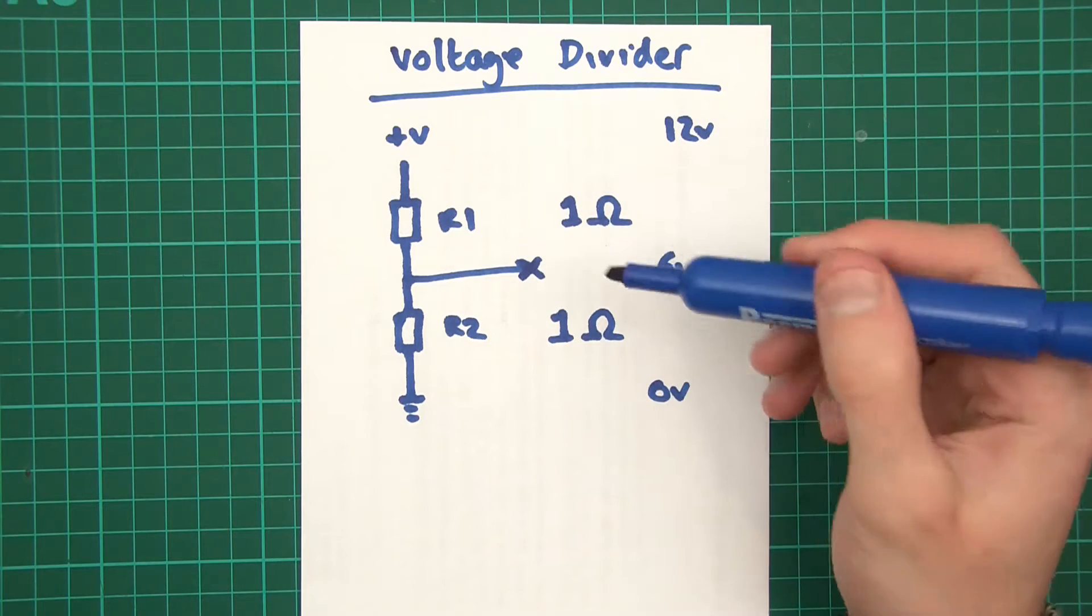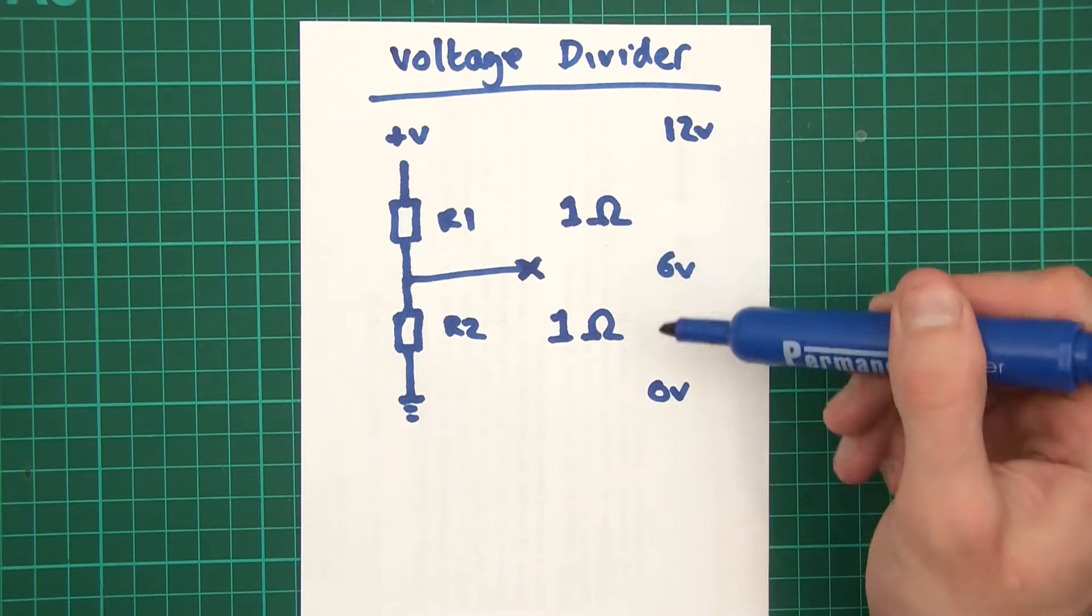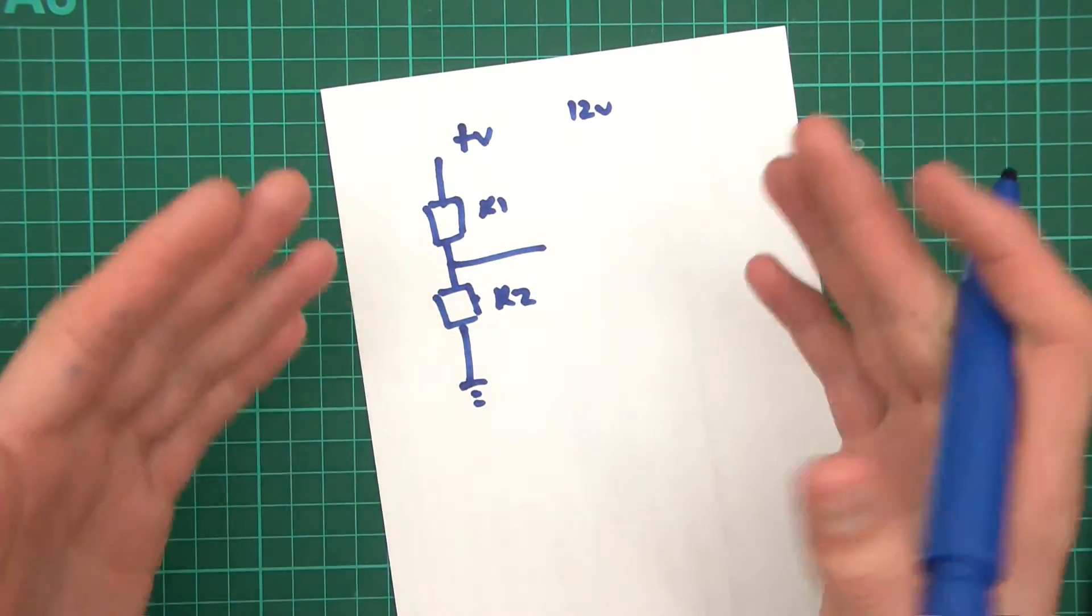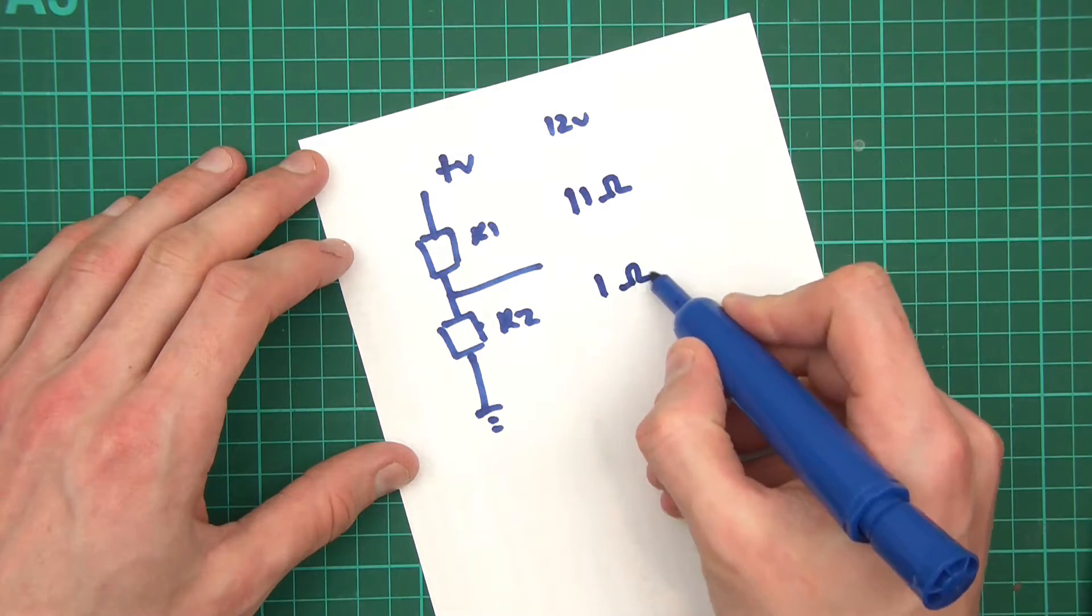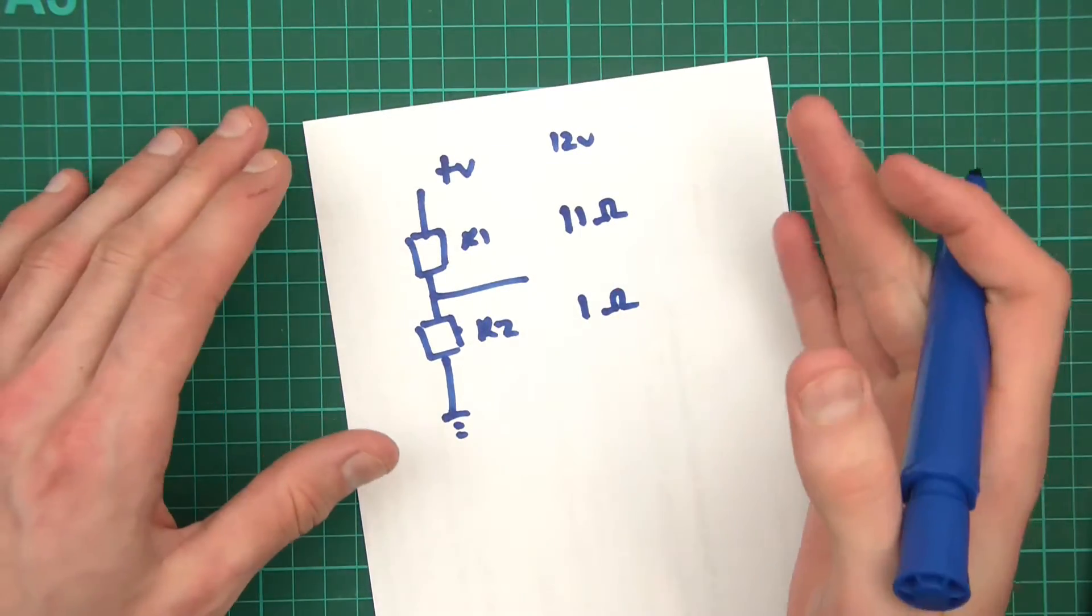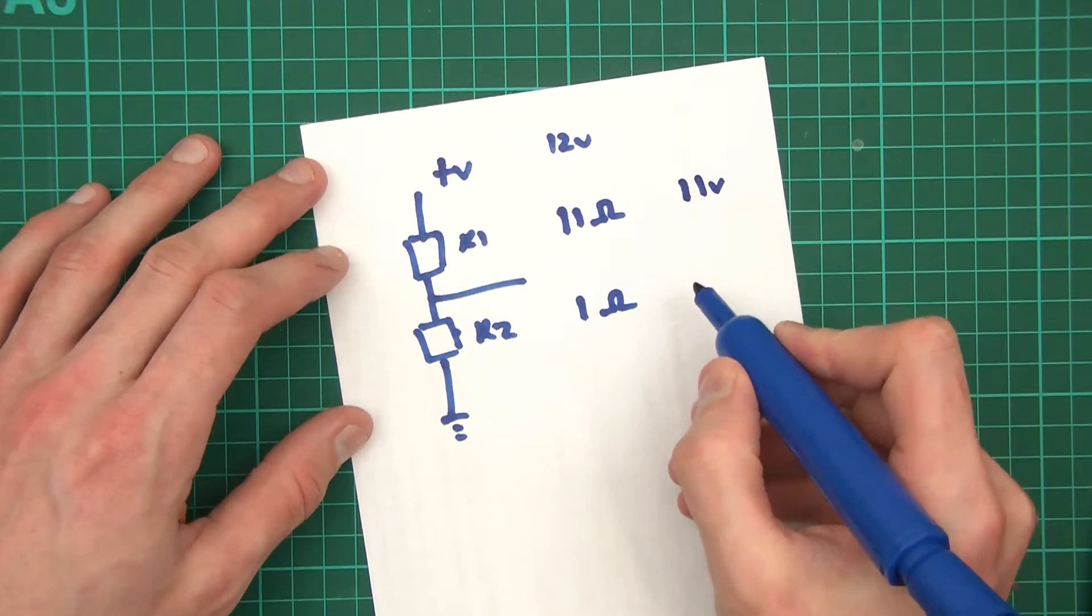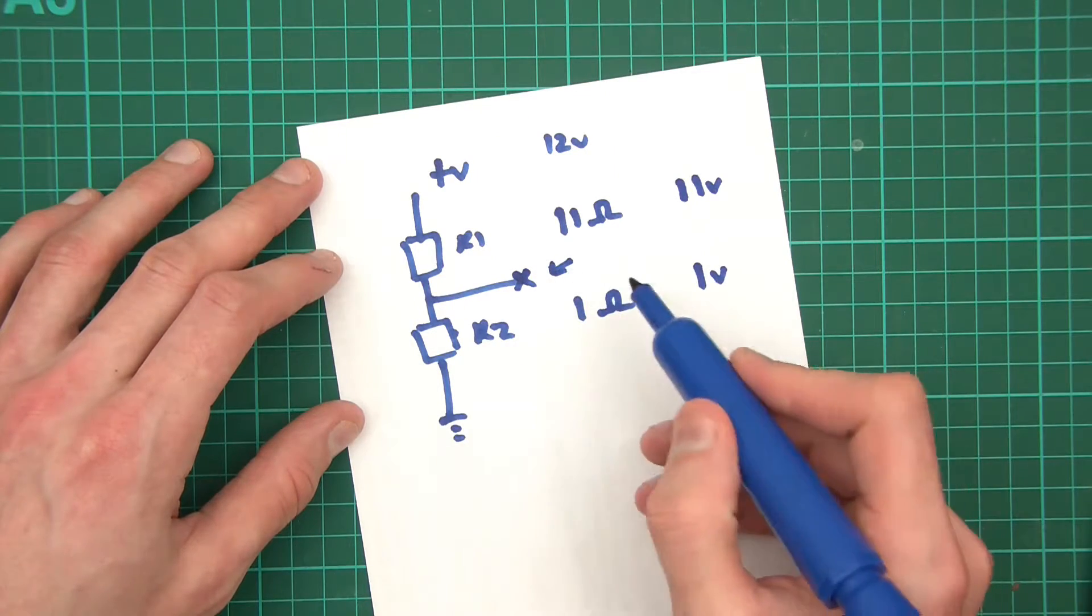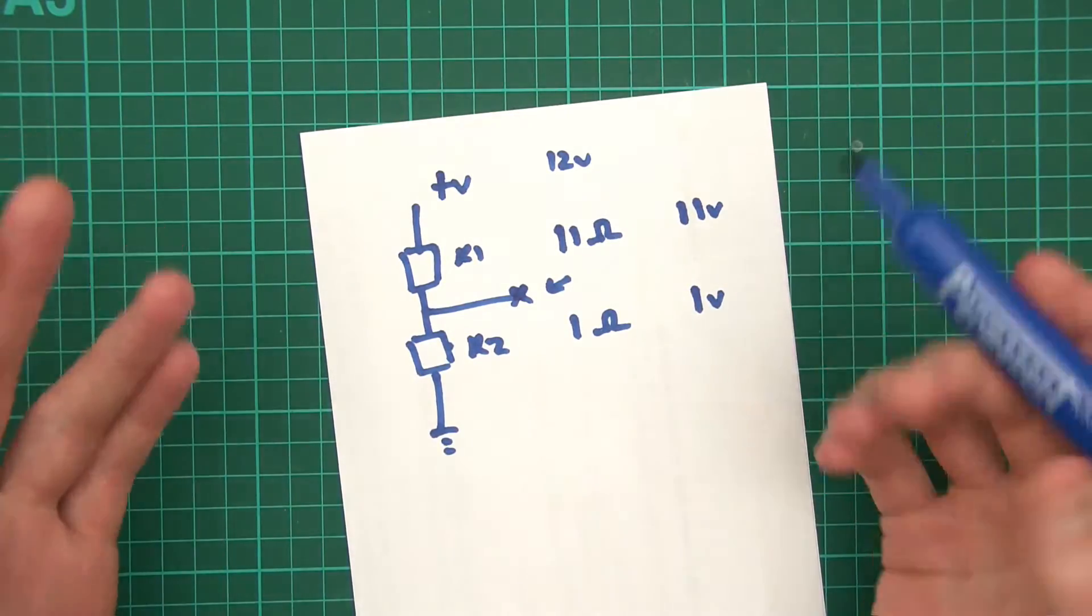So here, we start off with 12 volts, then there's a voltage drop here across R1, and there's a second voltage drop here across R2. And like I said, that's just the way it works. Every time there's a load, there's a voltage drop, if it's a complete circuit of course. So if we start with 12 volts, and we have two loads, and both loads are of equal resistance, then the voltage drop is also equal. So we start with 12 volts, we have a 1 ohm resistor, therefore there's a 6 volt drop. Then we have another 1 ohm resistor, another 6 volt drop. And that's very simply how a voltage divider works.